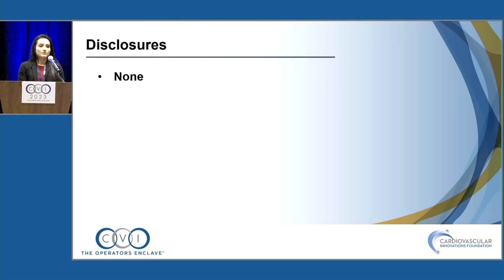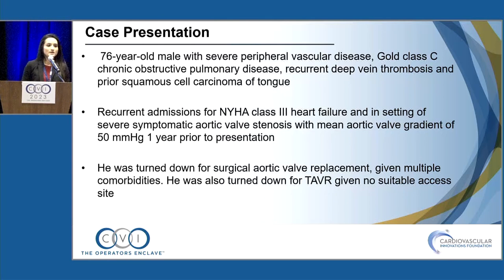I have no disclosures. We have a 76-year-old male with multiple comorbidities including peripheral vascular disease and COPD, who had heart failure for a year in the setting of severe symptomatic aortic stenosis. He was turned down for both TAVR and surgery because of his high risk and lack of vascular access.